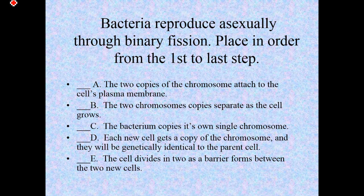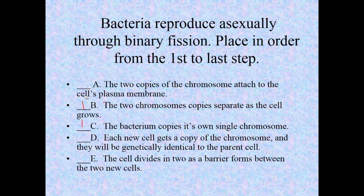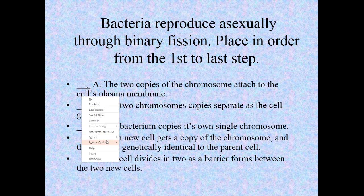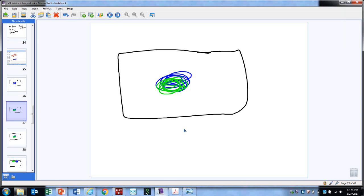So what's the first step? What do we label? You said C — good. So number one is C: the bacteria copies its DNA. Let's erase the error — it's good that we caught it. So the bacteria copies its DNA; we just saw that.